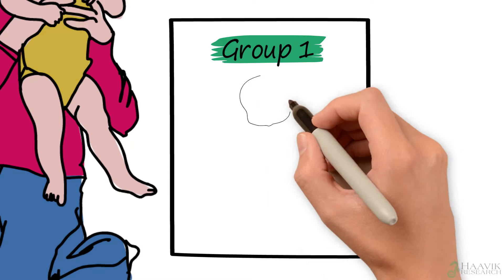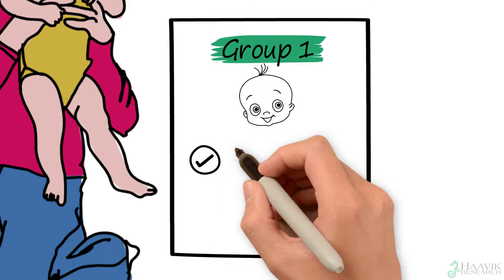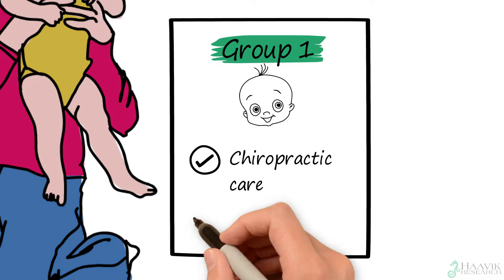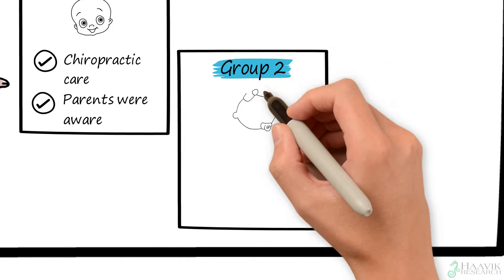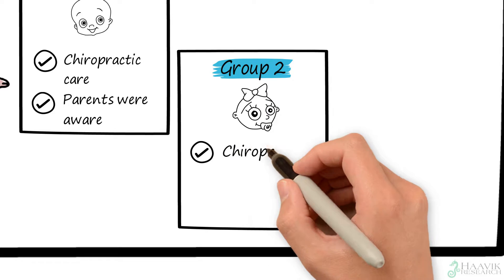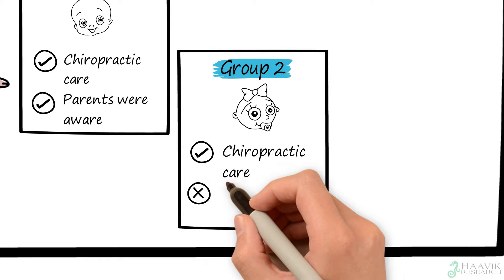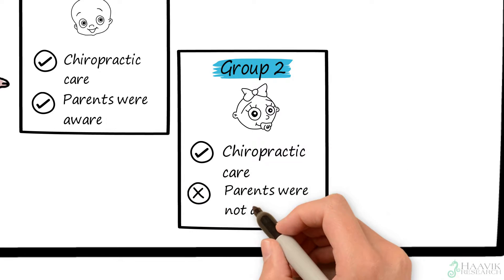The first group of babies were given chiropractic care, and their parents were aware that this was happening. The second group also received chiropractic care, but their parents didn't know whether their baby was receiving care or the control intervention.